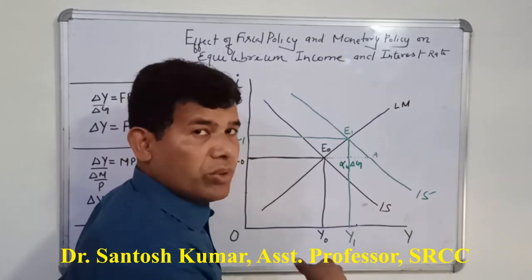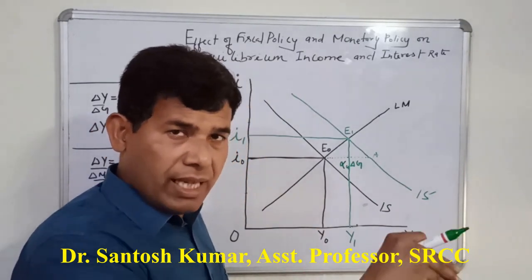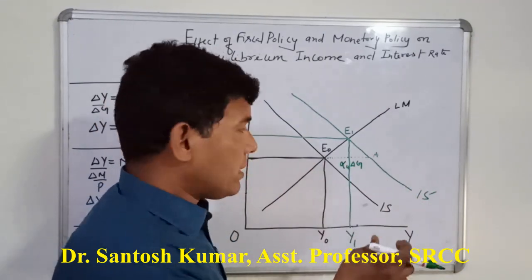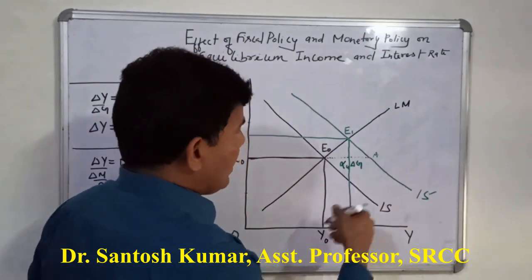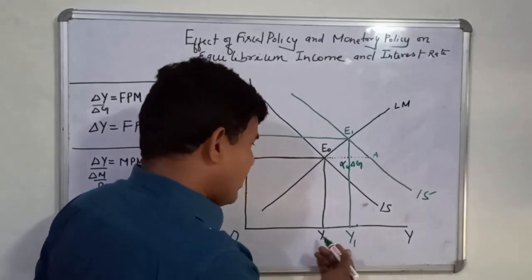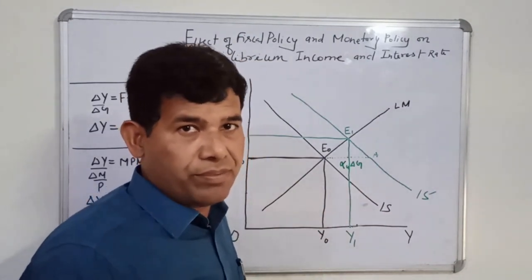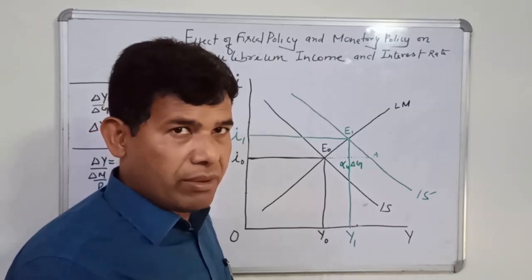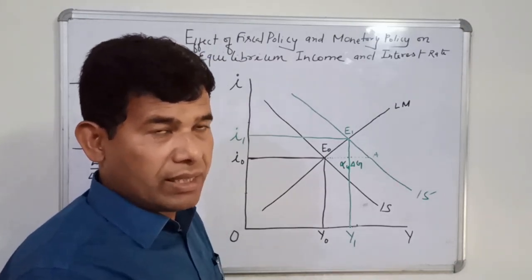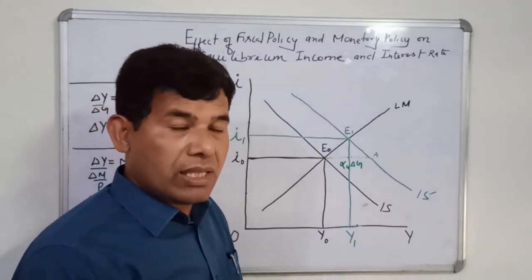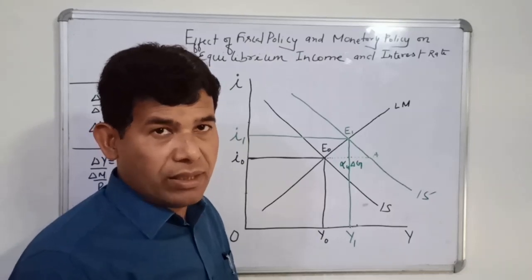Some portion of the rise in income due to rise in government expenditure is offset by rising interest rate, due to which there is a fall in investment. So the rise of income due to rise in government expenditure is partially offset by fall in private investment. After expansionary fiscal policy, we have rise in equilibrium income from Y0 to Y1, but it is accompanied by fall in private investment. Government expenditure in the economy rises, private investment falls, and therefore the share of private sector falls and share of government expenditure rises. This is the reason why the private sector is often opposed to rising government expenditure and rising fiscal deficit.